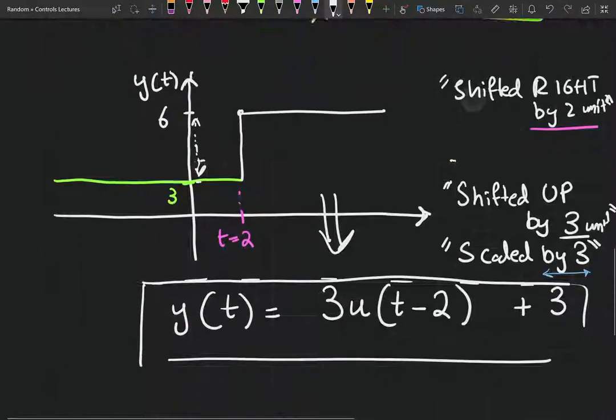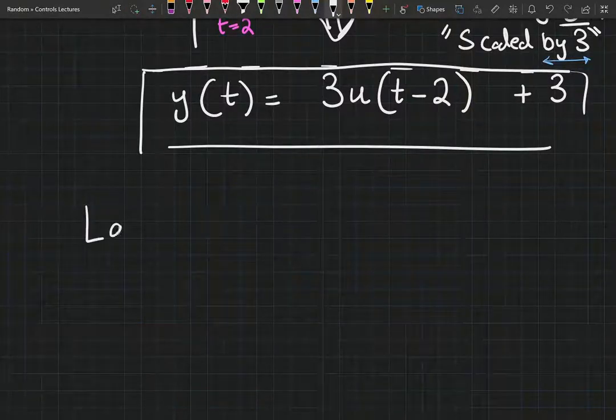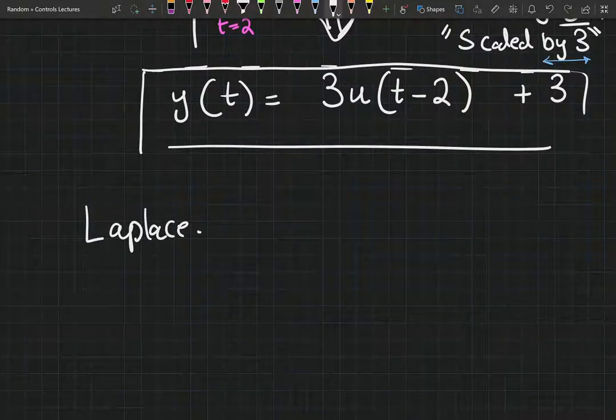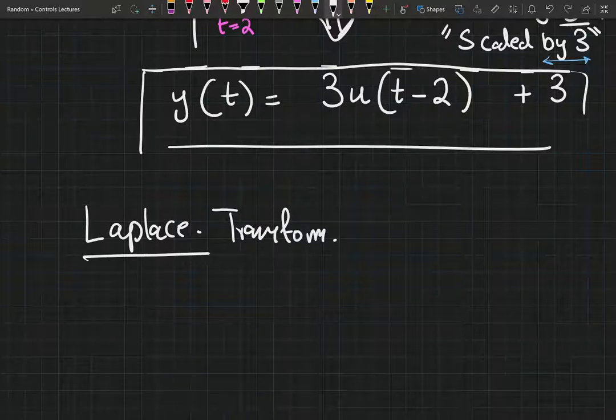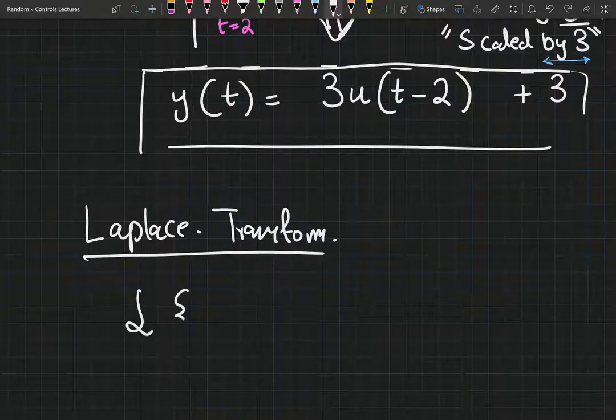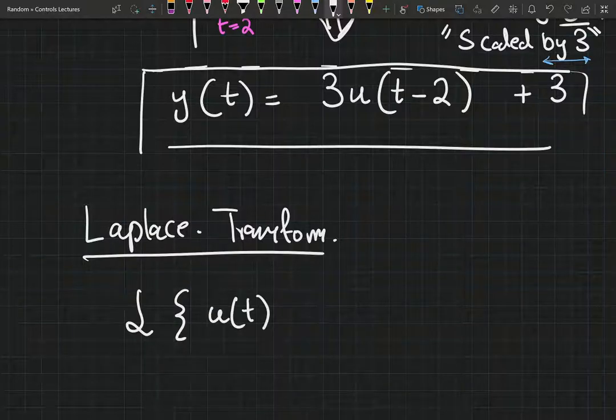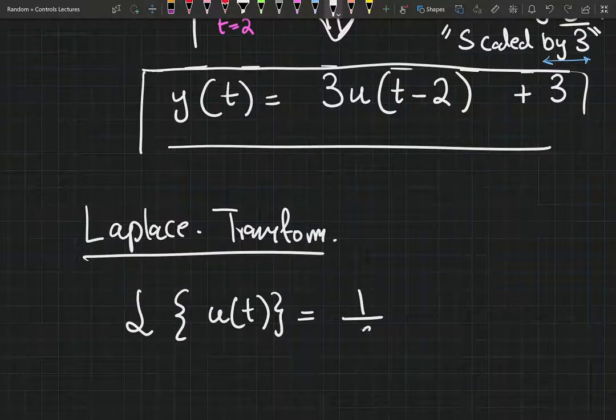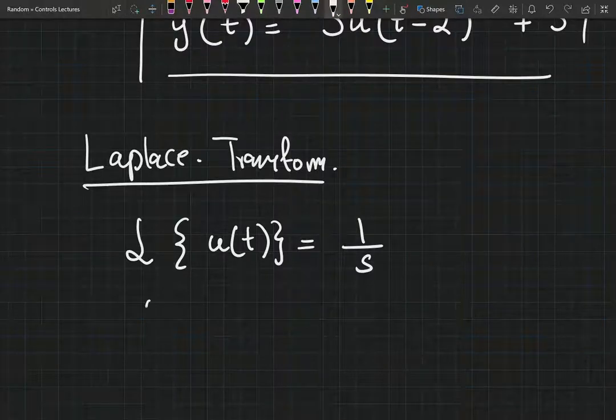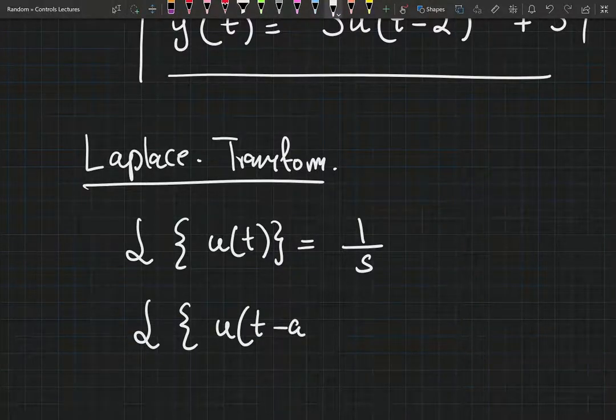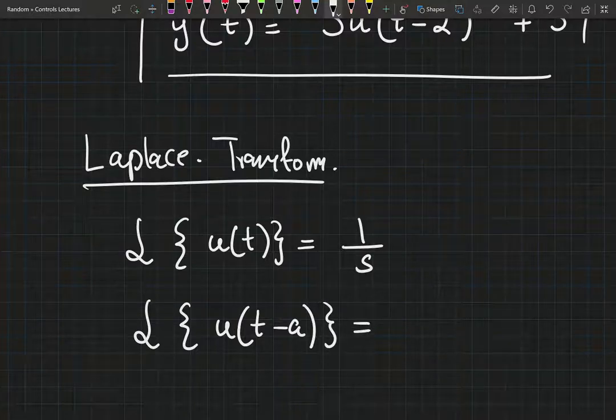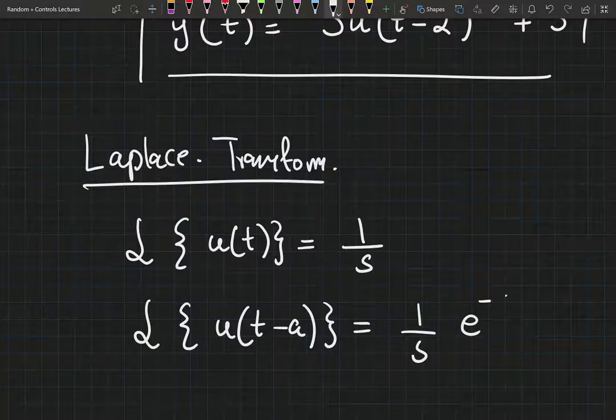And just to finish this video, I'm just going to briefly mention the Laplace transform of this function. So if you were to take the Laplace transform of u of t, you would get one over s. And if you were to take the Laplace transform of u of t minus a, the transformed step function, you're going to get one over s multiplied by e to the negative as.